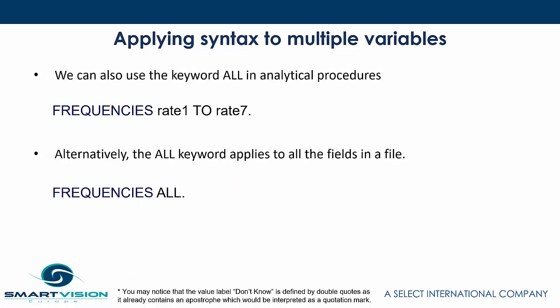The second example is using the TO keyword on an analytical procedure. You could do it on cross tabs, frequency tables, or descriptives. Here we're saying apply frequencies and instead of listing out all of the individual field names, we're simply saying rate one to rate seven. Alternatively, you can use the ALL keyword, which will simply run frequencies on all of the variables in the data set.